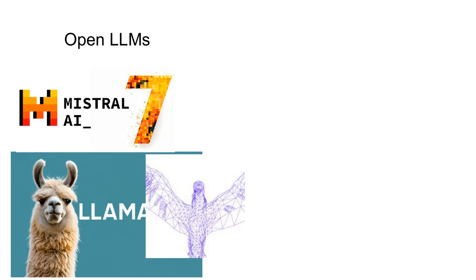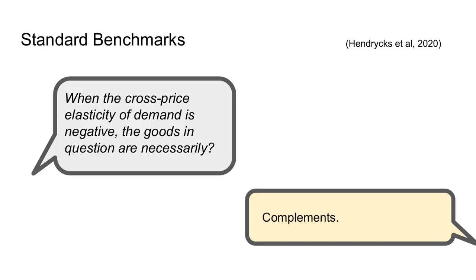For the last year, we've seen the release of a large number of very powerful open source language models. In this talk, we'll primarily focus on 7 billion parameter models, which are some of the smaller models that still exhibit some of the impressive properties of large language models. One challenge with these models is that when they're released, they're released as raw language models, and when you try to run them on basic academic benchmarks, they don't perform that well out of the box.